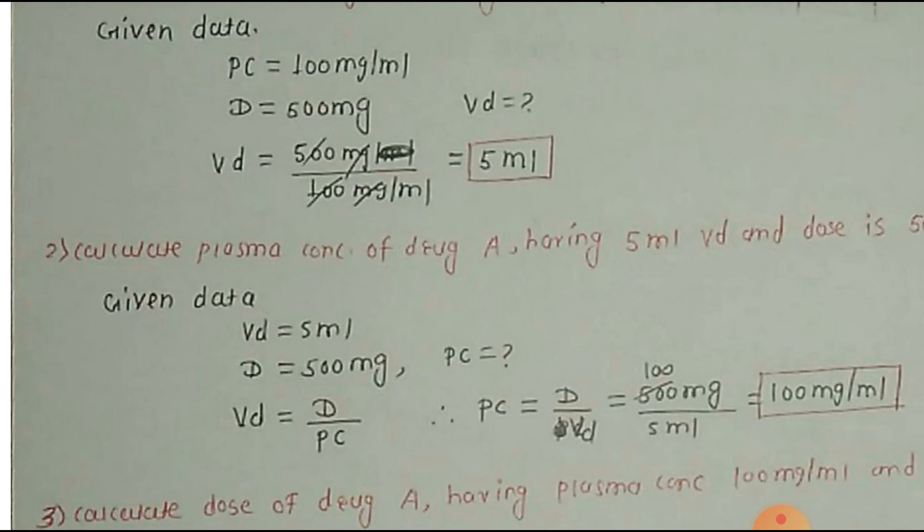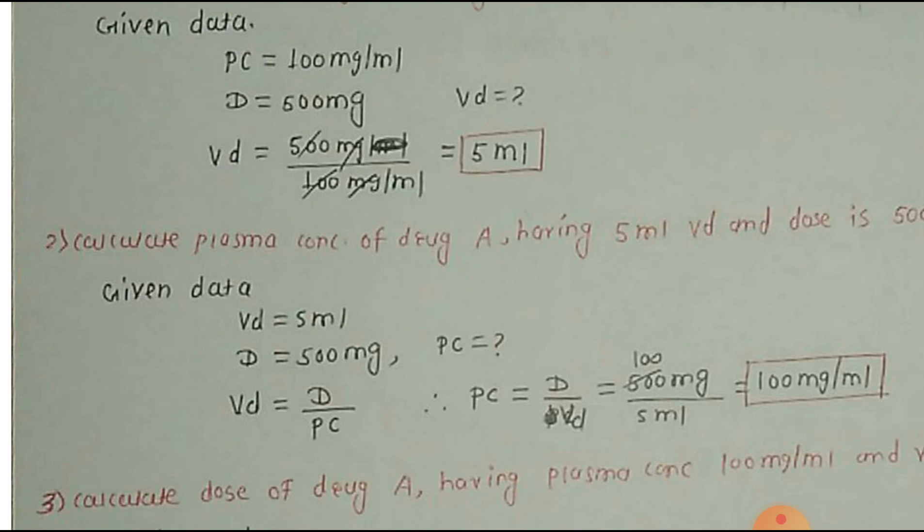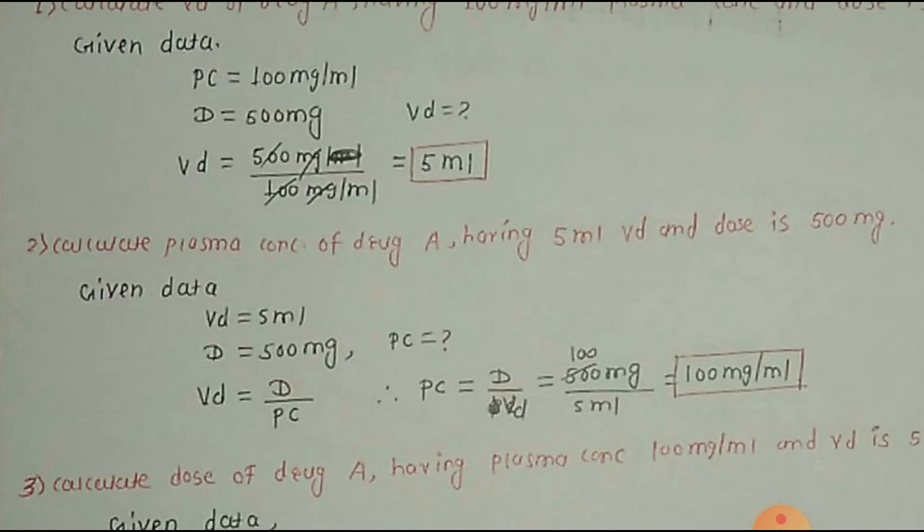Second is calculate plasma concentration of drug A having 5ml Volume of Distribution and dose is 500mg. Given data, Volume of Distribution is equal to 5ml. Dose of drug is 500mg. We have to calculate plasma concentration.